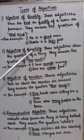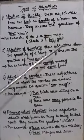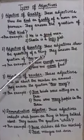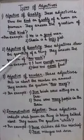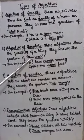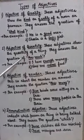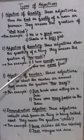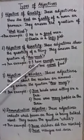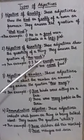2. Adjective of quantity. These adjectives show the quantity of a thing. They answer the question of how much? For example, I have enough money. How much money do you have? Enough.